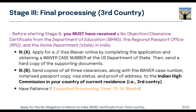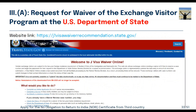Once you have received clearances from all three offices — MHRD, RPO, and Home Department — you are ready for Stage 3 final document submission. Note that sometimes RPO clearance is not required at this stage. For Stage 3, apply for the J1 visa waiver from the US Department of State by filling form DS-3035. After submitting, a waiver case number specific to you will be generated, and you will receive a PDF copy to download and print.